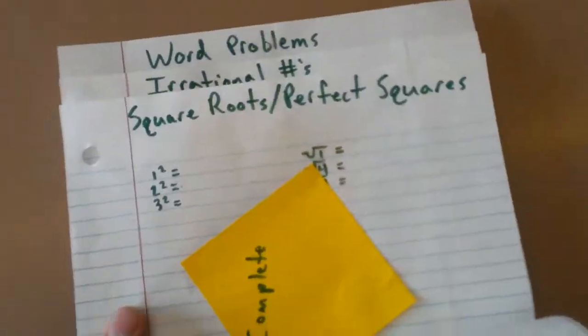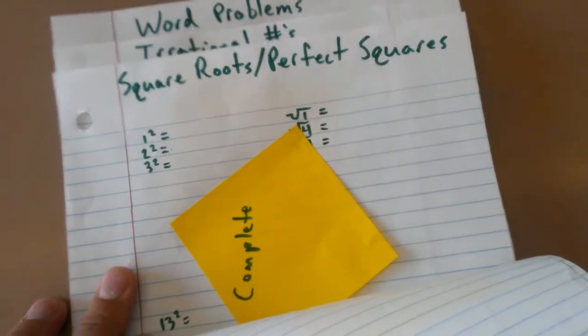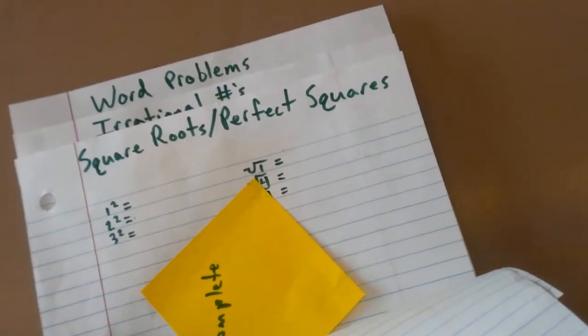In the square roots and perfect squares section, they are to list all of the square roots and perfect squares from 1 to 13, and then also from 1 to 169.